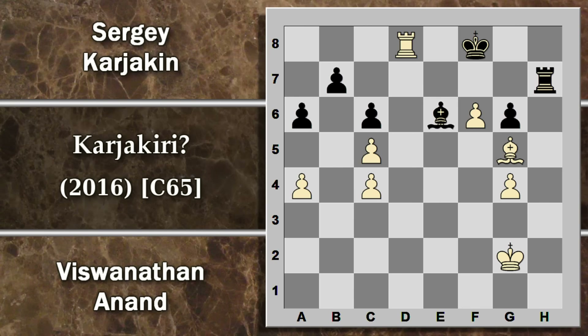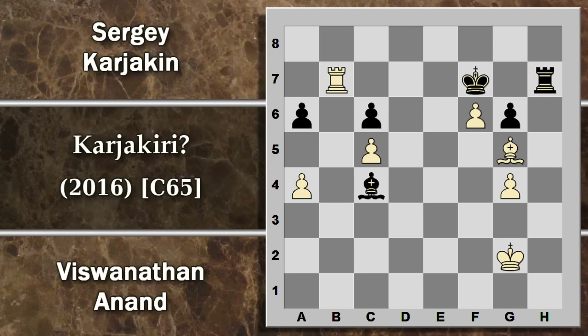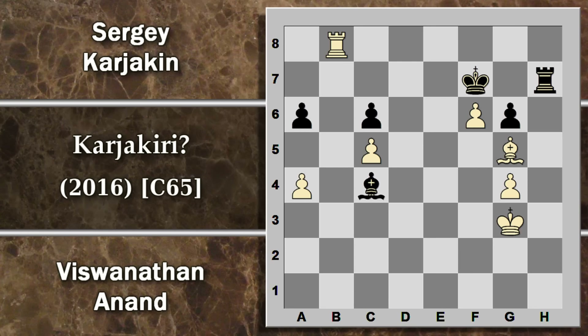Il nero ha due opportunità e non c'è modo pratico di difendere il pedone, quindi tanto vale catturare qualcosa. Viene catturato il pedone C4. Se si cattura il pedone G4 invece, la torre prende con scacco, il re si sposta, poi torre B6 con attacco ai pedoni e il nero non può difenderli entrambi. Catturando in C4 già viene difeso questo pedone. Dopo il cambio avvenuto in partita, re G8, il bianco ha modo di replicare con torre B6. Si prosegue con lo scacco, re F7, e ora re G3 con attivazione del re. Il re nero è abbastanza bloccato ma potrebbe riuscire a penetrare al centro.